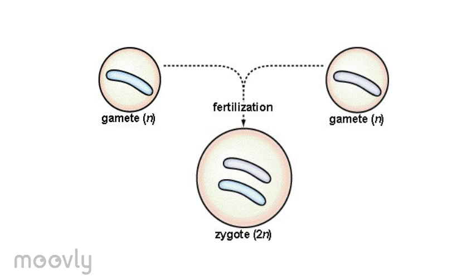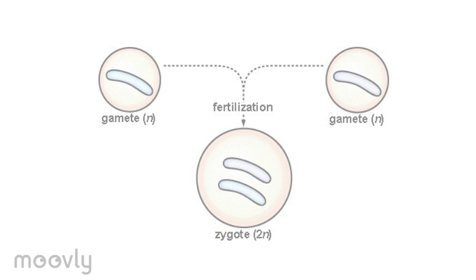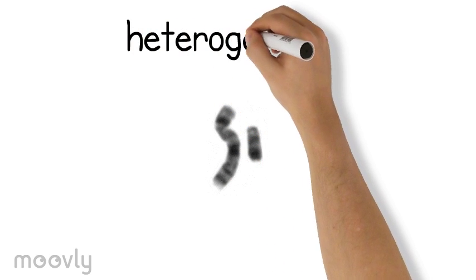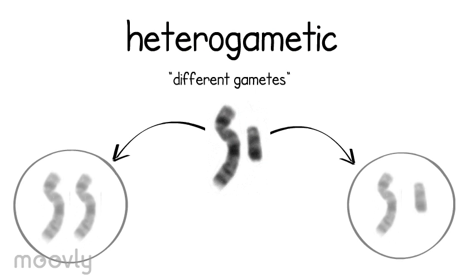These granddaughter cells become reproductive cells, or gametes, which later fuse in fertilization to form a single diploid zygote. For many organisms, sex is determined by the sex chromosome that the gamete of the heterogametic parent contributes to the zygote.